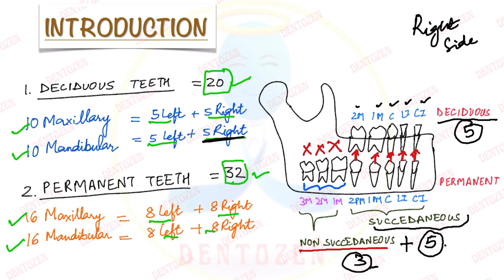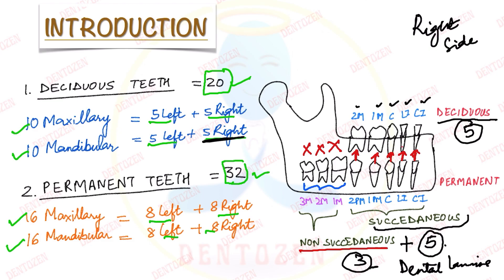Why do we need to know this? Because these three different types of teeth form from different regions of the dental lamina. So let's see what happens when tooth development starts.